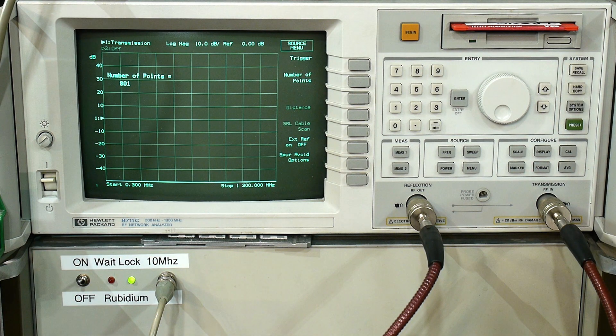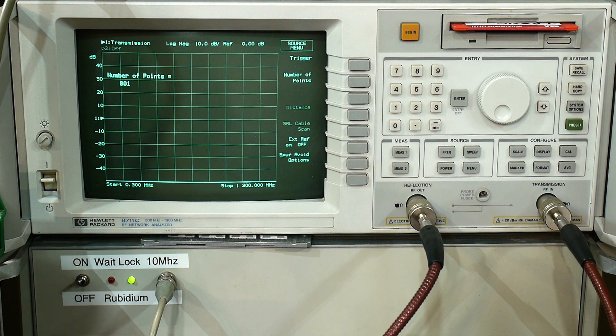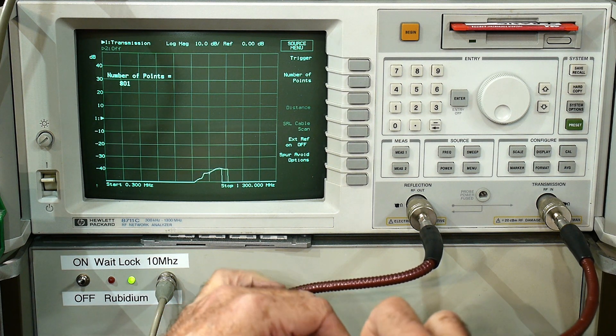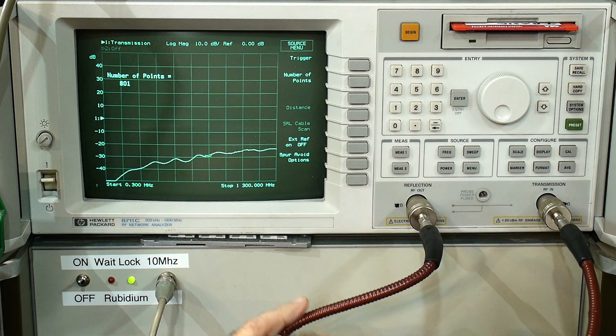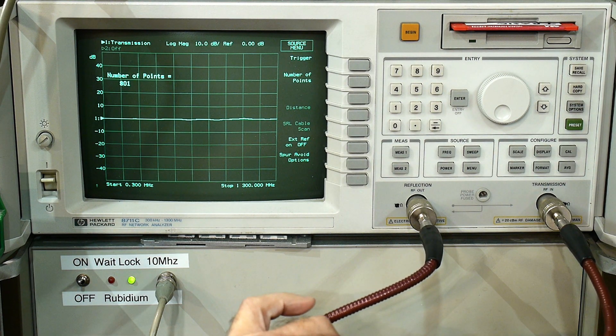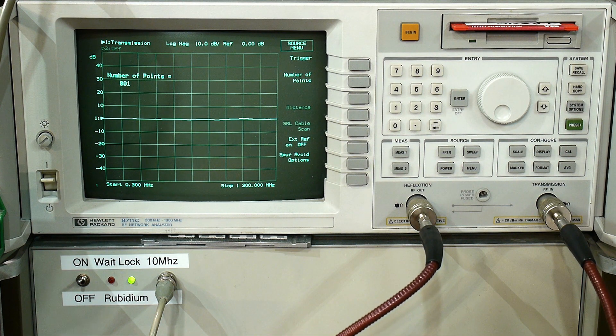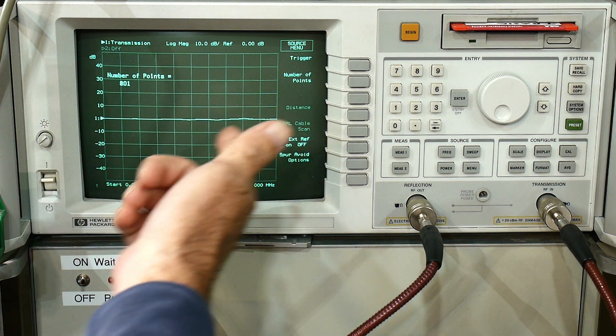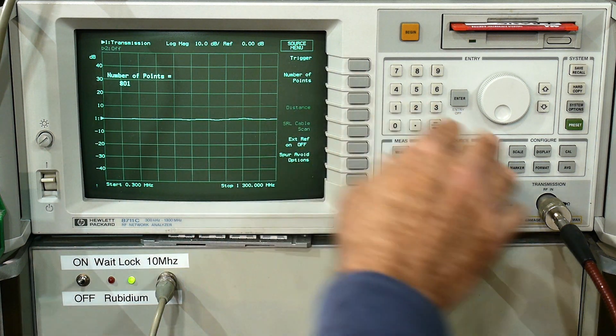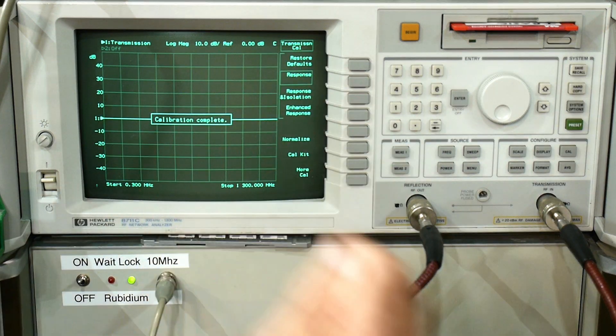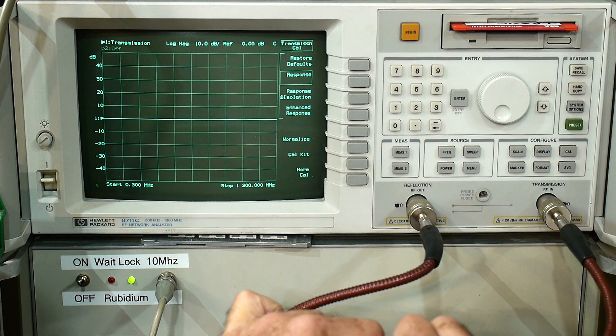Let me calibrate the machine first. We're going to do the through calibration, then we'll measure S21. I usually run it at 801 points. It's plenty fast and it makes me feel like I'm doing something. It doesn't really need calibration, it's almost good already, but we'll go ahead and calibrate it. We'll do calibration response and measure it. Now we get a perfectly flat line. You can see how fast calibration is on this thing too.